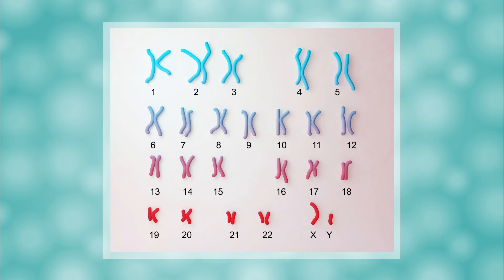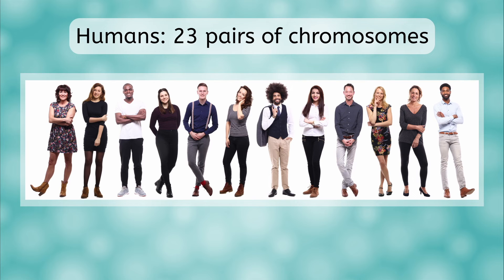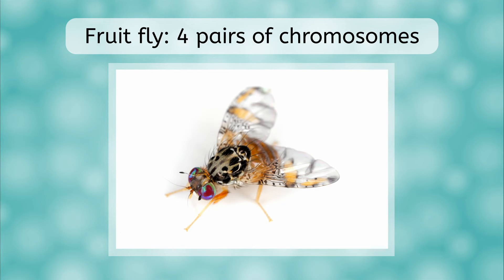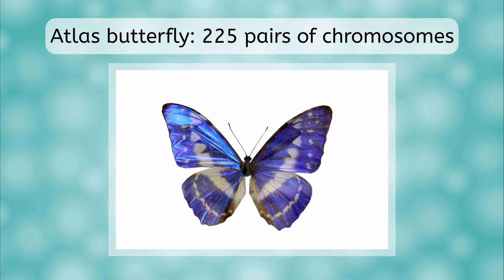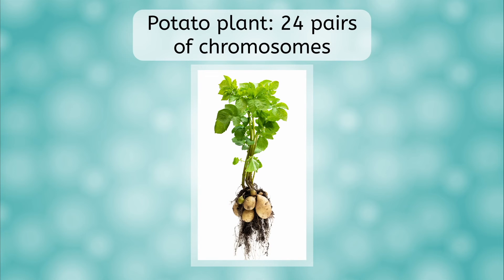Different species have different numbers of chromosomes. You might assume that larger, more complex species have more chromosomes than simple organisms, and sometimes that seems to be the case — but the numbers can be a little random. The animal with the highest number of chromosomes is the Atlas blue butterfly, with 225 pairs. Dogs and chickens both have 39 pairs, and even a potato plant has 24 pairs — all of those beat our haploid number of 23. It turns out that the number of chromosomes isn't that useful in determining the size or complexity of an organism.